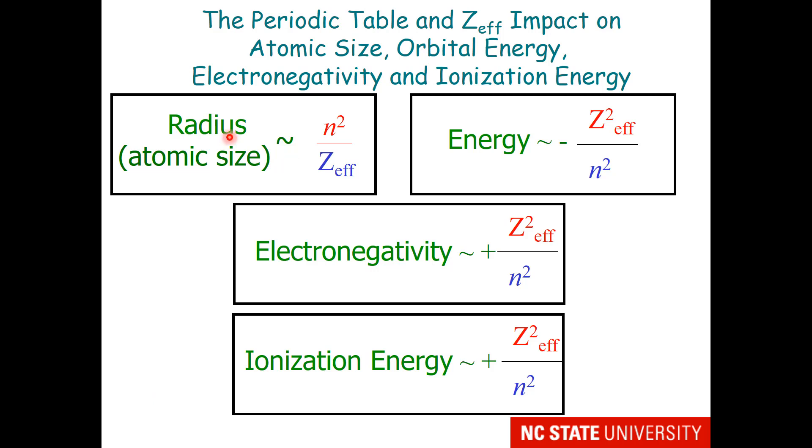The radius, which is the atomic size, is roughly proportional to n-squared over z-effective. Orbital energies are roughly proportional to negative z-effective-squared over n-squared. Electronegativity is roughly proportional to z-effective-squared over n-squared, this time a positive value. And ionization is roughly proportional to the same formula.